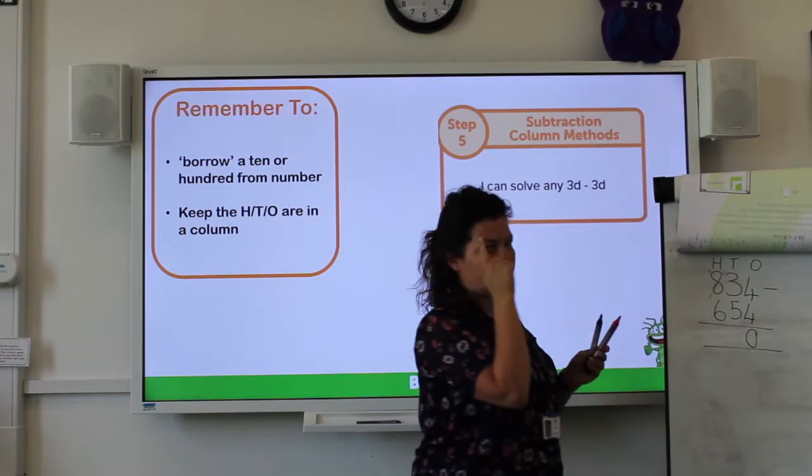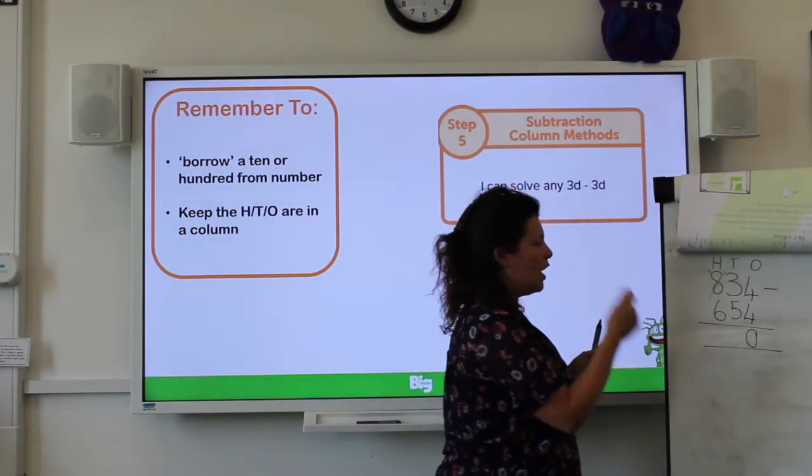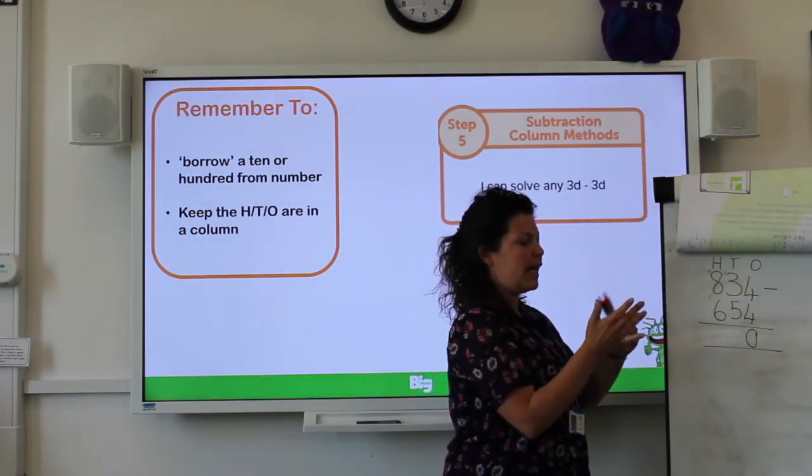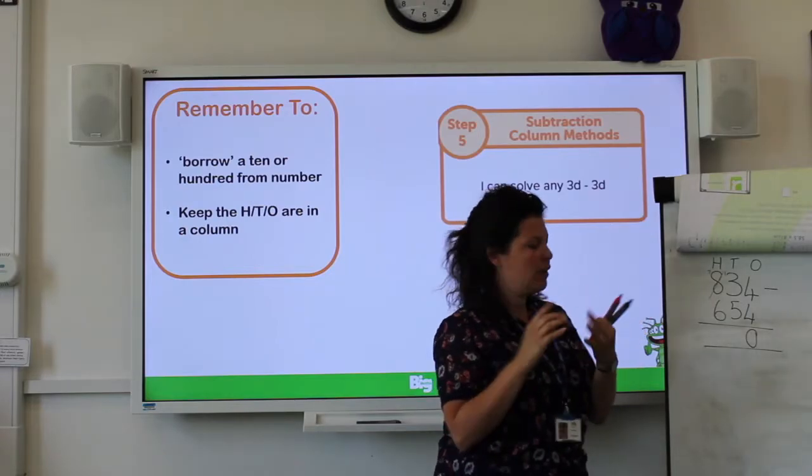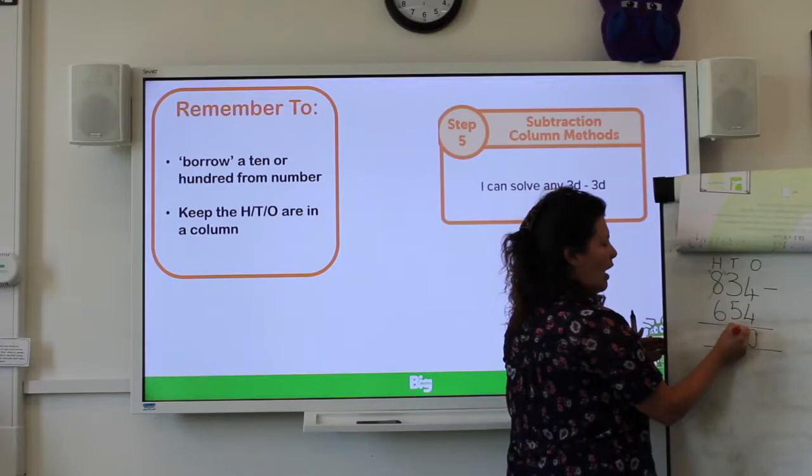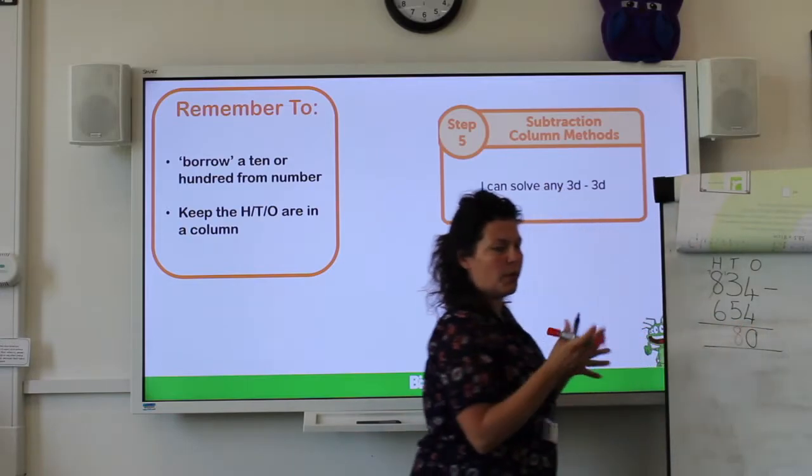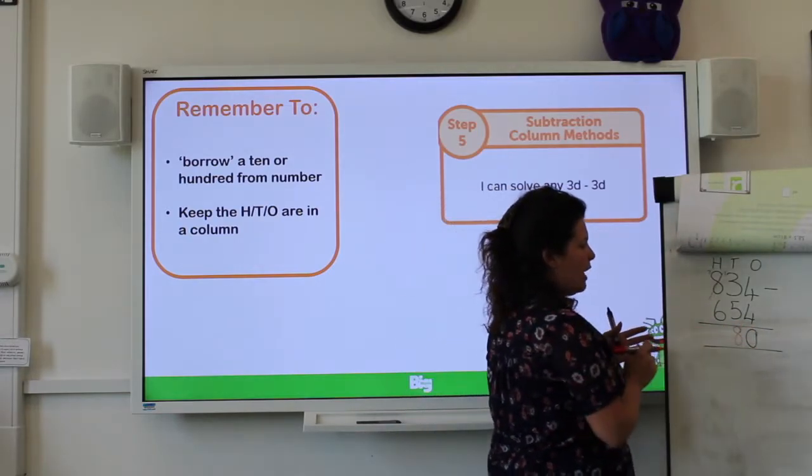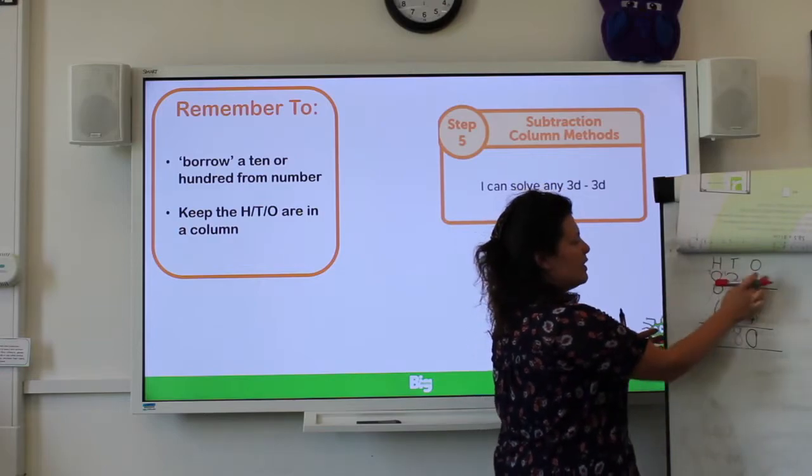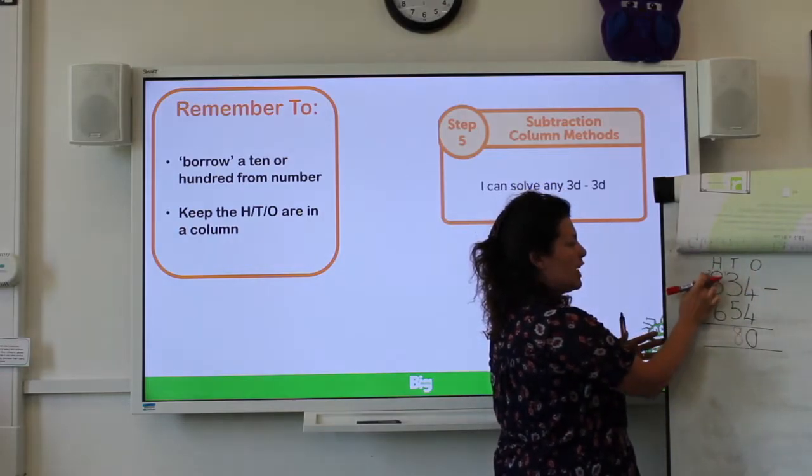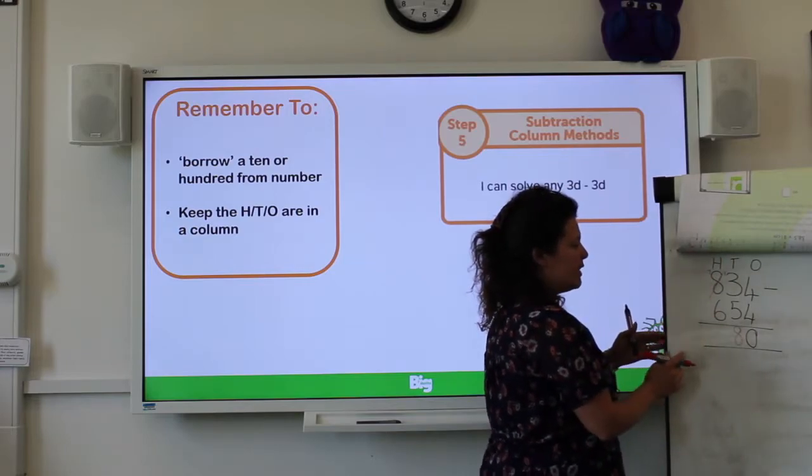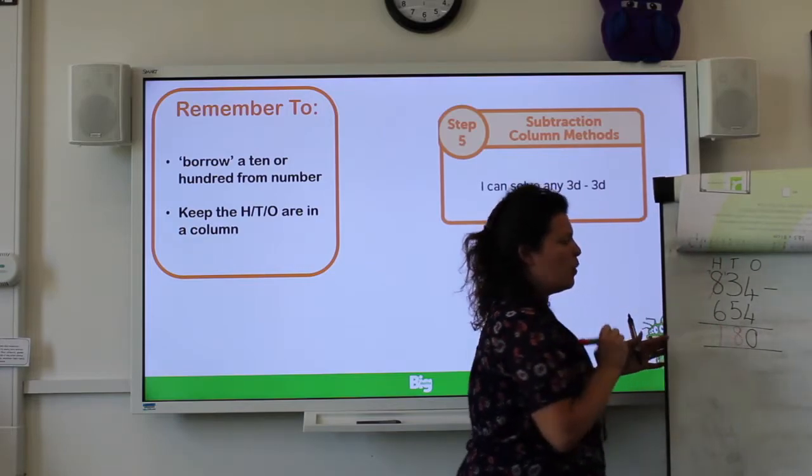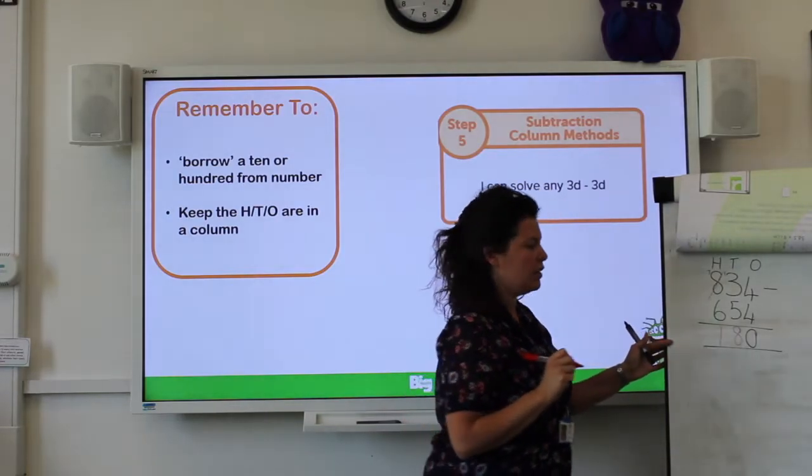So you could keep the 5 in your head and count up: 5, 6, 7, 8, 9, 10, 11, 12, 13. And that gives us 8. So 8 tens, we know that's 80. Now this is now 700, but we're just looking at it as 7 because we know that's in the 100 column. 7 take away 6 is 1 and the answer is 180.